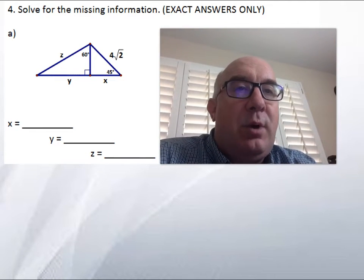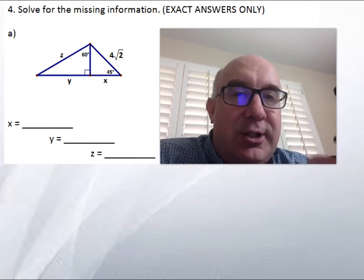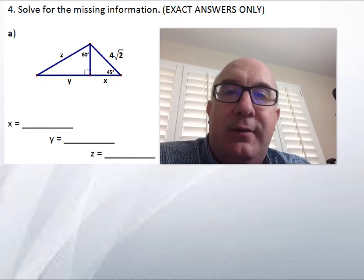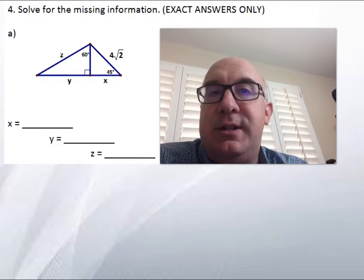I don't have too much to say on this problem other than it's a combination problem. Do you see how there are two triangles there, the 45-45 right triangle and the 30-60-90?